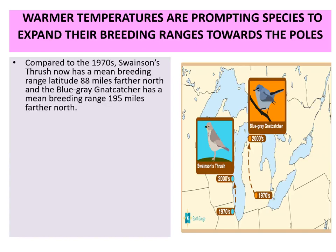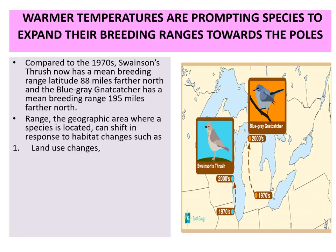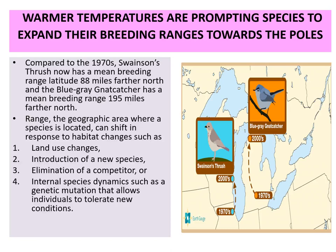Warmer temperatures are prompting species to expand their breeding range towards the poles due to global warming. Compared to 1970, Swainson's Thrush now has a mean breeding range latitude 88 miles farther north, and the blue jay and nuthatch have a mean breeding range 195 kilometers farther north. Range — the geographical area where a species is located — can shift in response to habitat changes such as land use changes, introduction of new species, elimination of competitors, internal species dynamics like genetic mutation, and climate change.